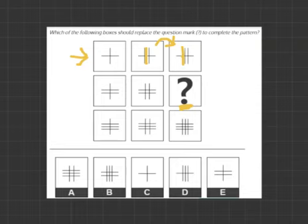So let's compare with the last row. We have one and then two and then three. So we can say that in the third column where our missing box is, there's going to be three vertical lines.